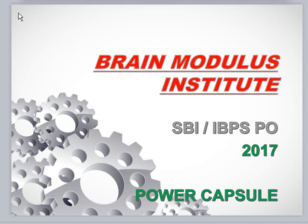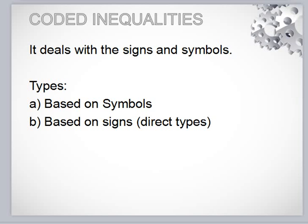Hello friends, my name is Kumar Sanu, I am from Brain Modulus Institute. Today this is our third lecture on the topic of reasoning, and the topic is coded inequalities. In coded inequalities we can understand it in two ways: one is according to the box method and another is the simple hidden trial method. The coded inequalities deals with signs and symbols, and basically it is of two types — based on symbol or based on sign. Signs mean greater than, less than, equal to, greater than equal to, less than equal to. Symbols mean like dollar, at the rate, hashtag, copyright — this kind of symbol.